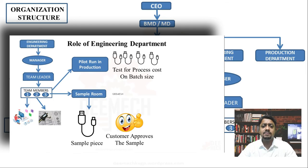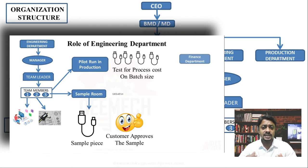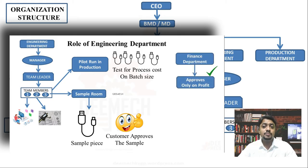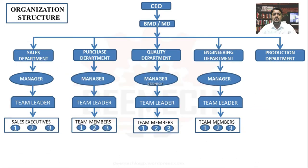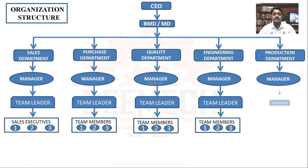When everything is up to the mark, they calculate the profit or loss. When the finance department approves the project — but only on profit — the actual production gets started. We have the production department, led by a production manager.